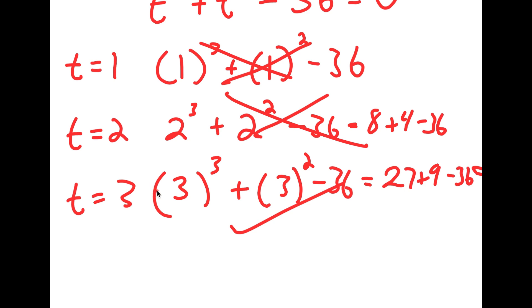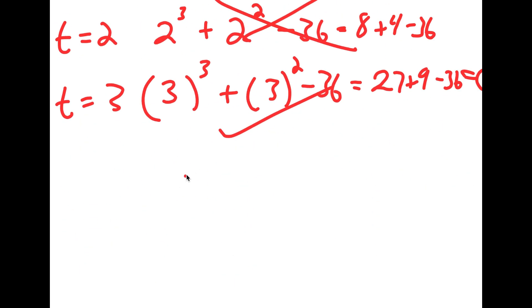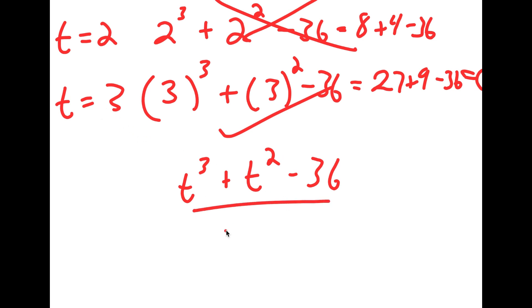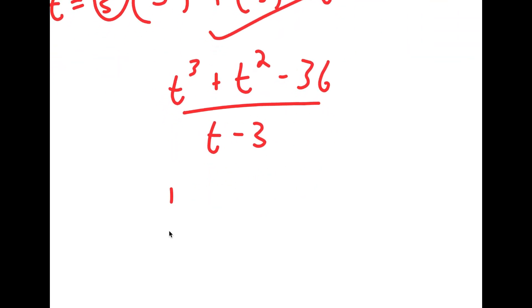Now, how are we going to use this solution to find the remaining solutions? What we can do is take our original equation t to the power of 3 plus t squared minus 36 and divide it by t minus 3, because 3 is a solution. We'll do this using synthetic division.